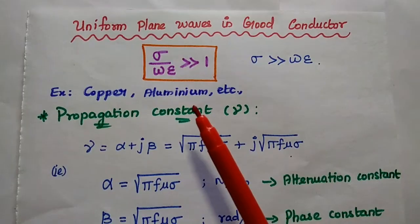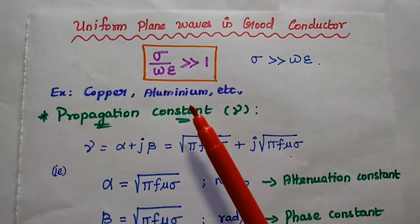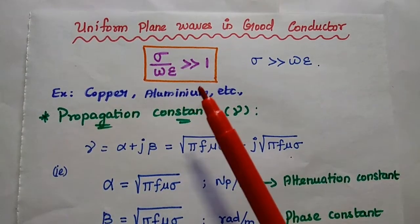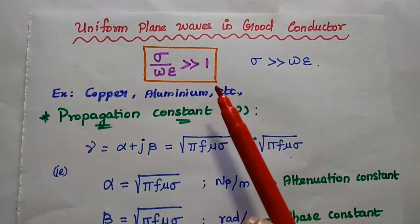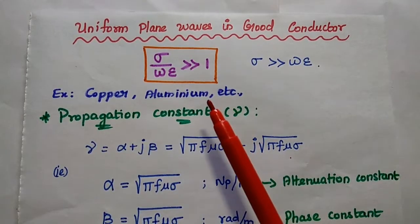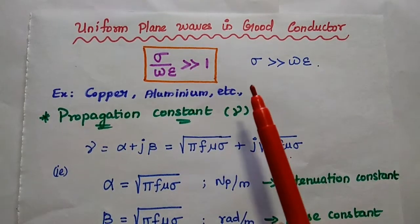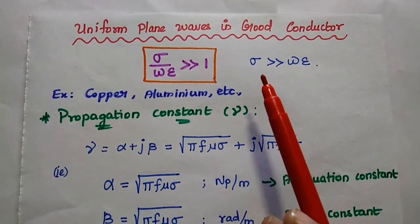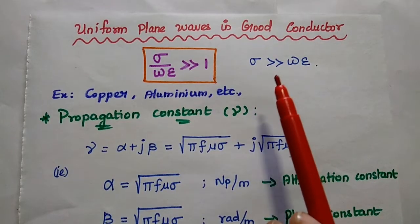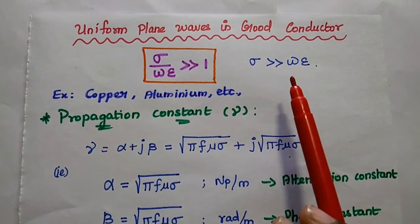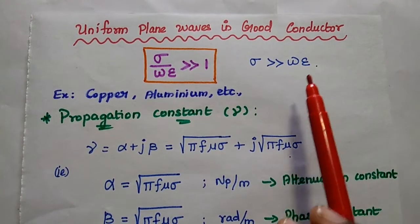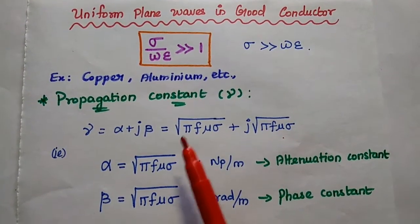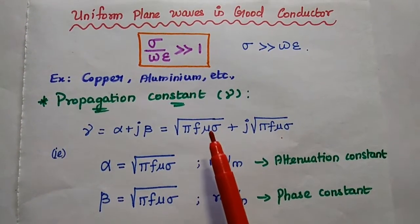For a good conductor, the ratio sigma by omega epsilon is far greater than 1. This is the condition for a good conductor — that is, the conductivity sigma is far greater than omega epsilon. Examples are copper, aluminium, etc.